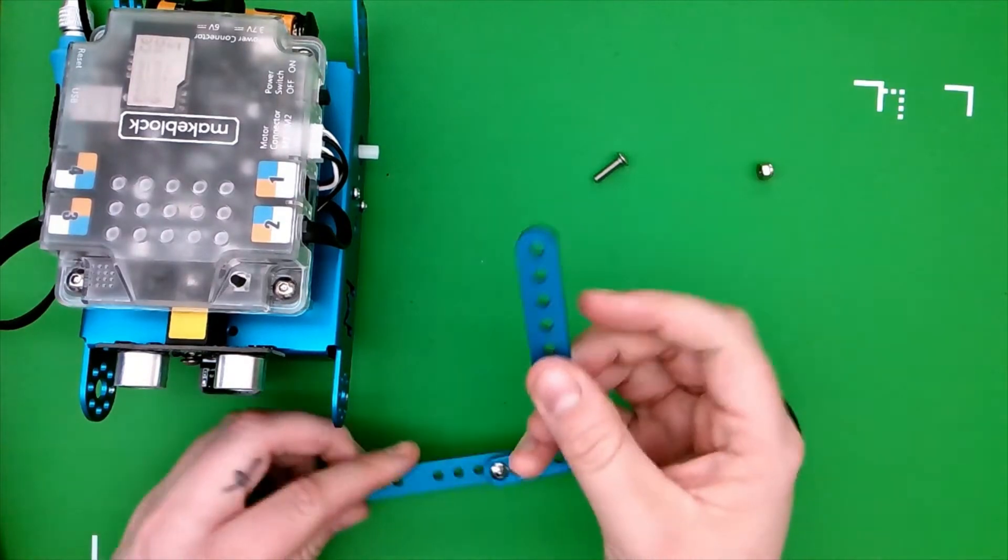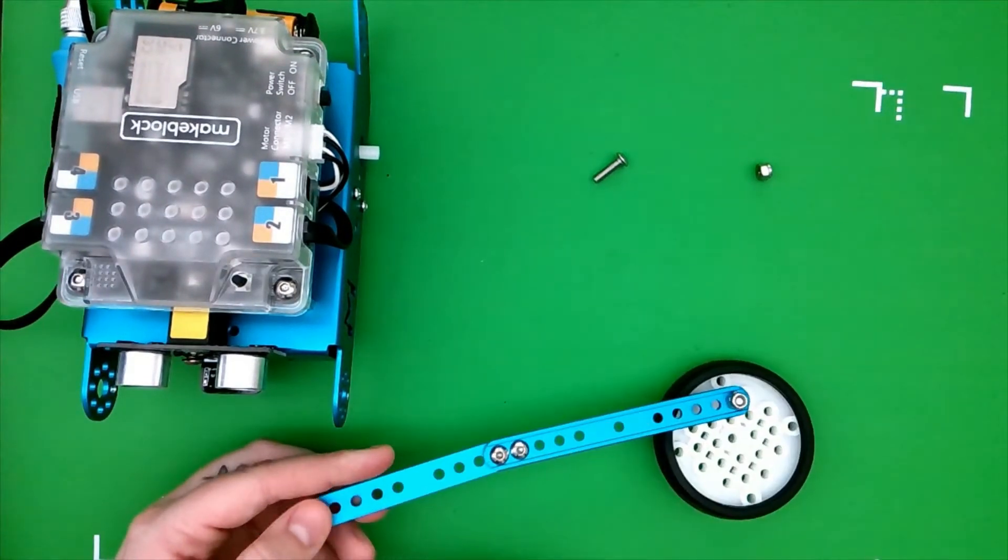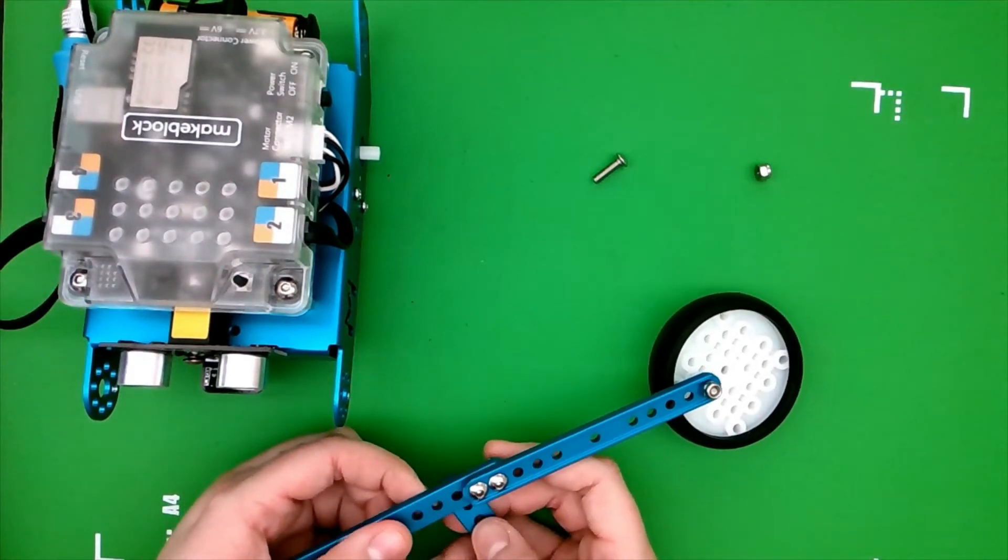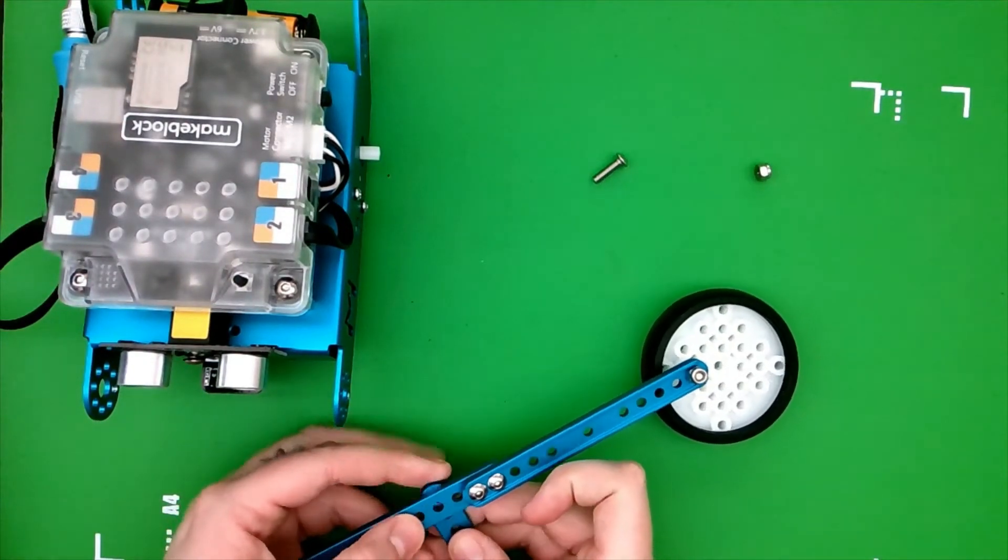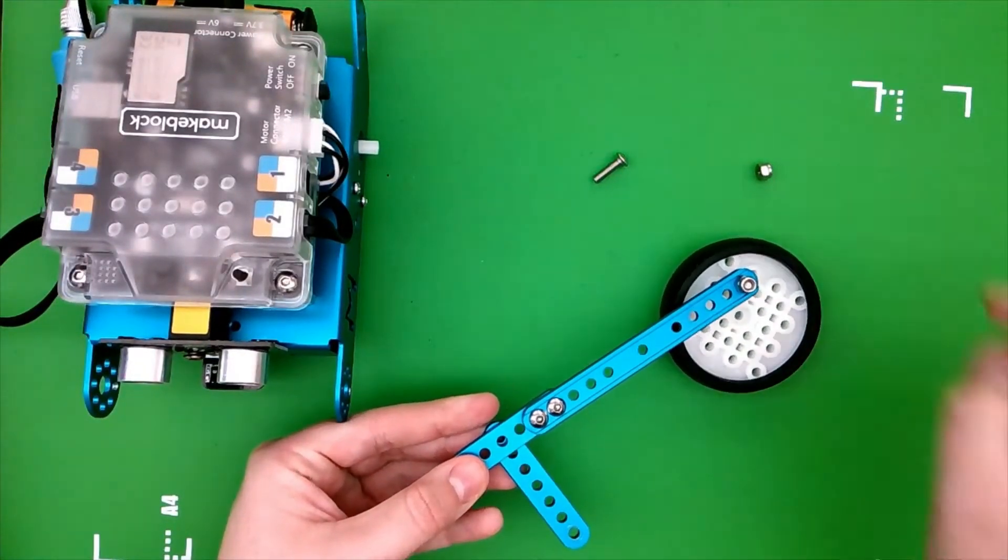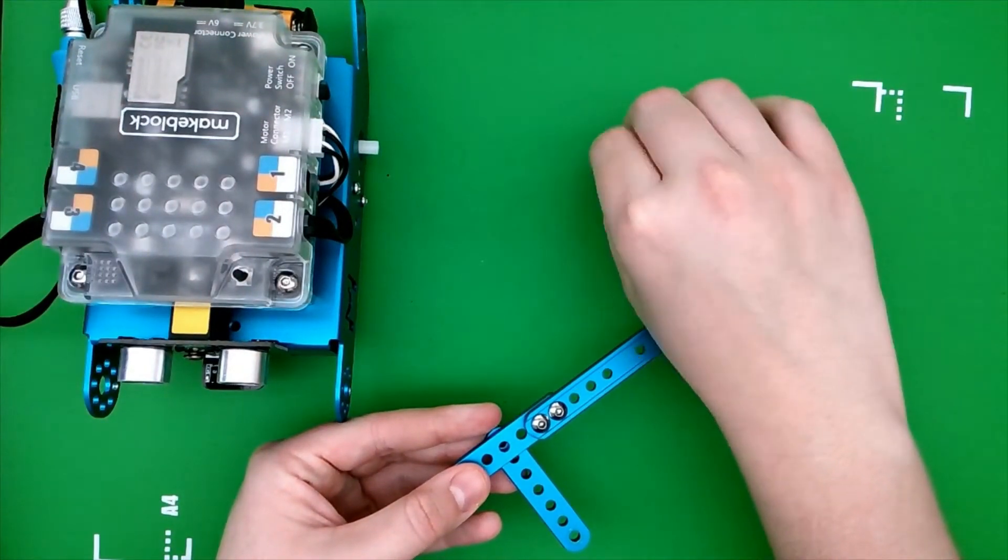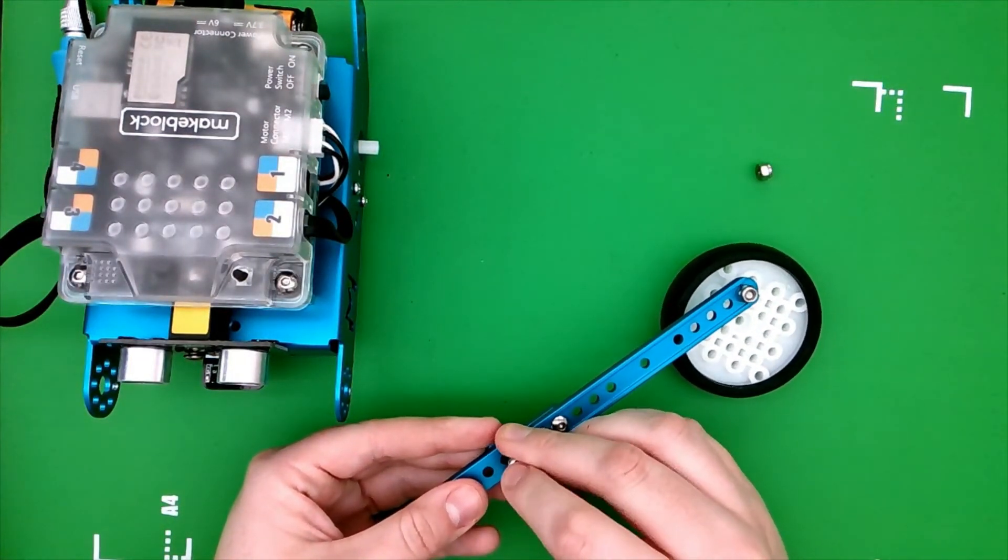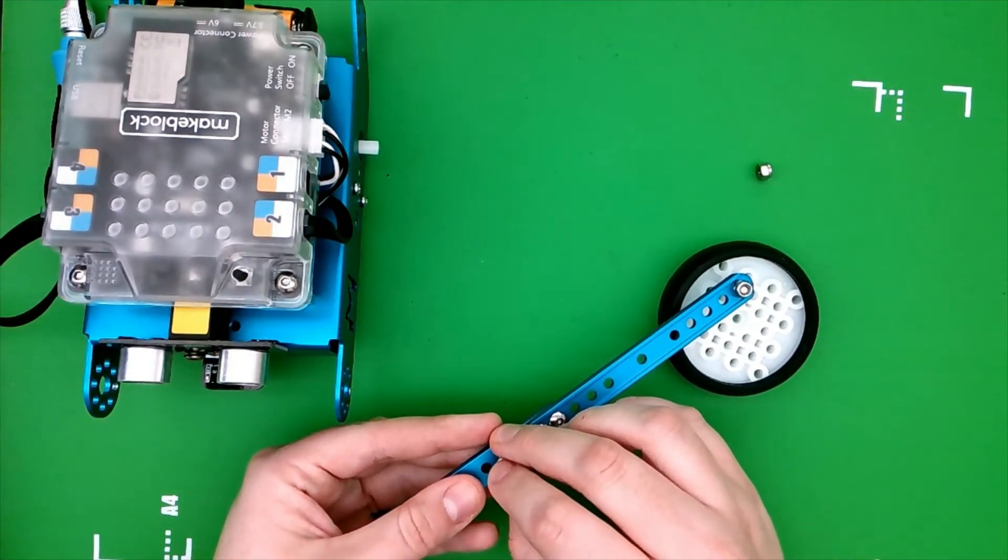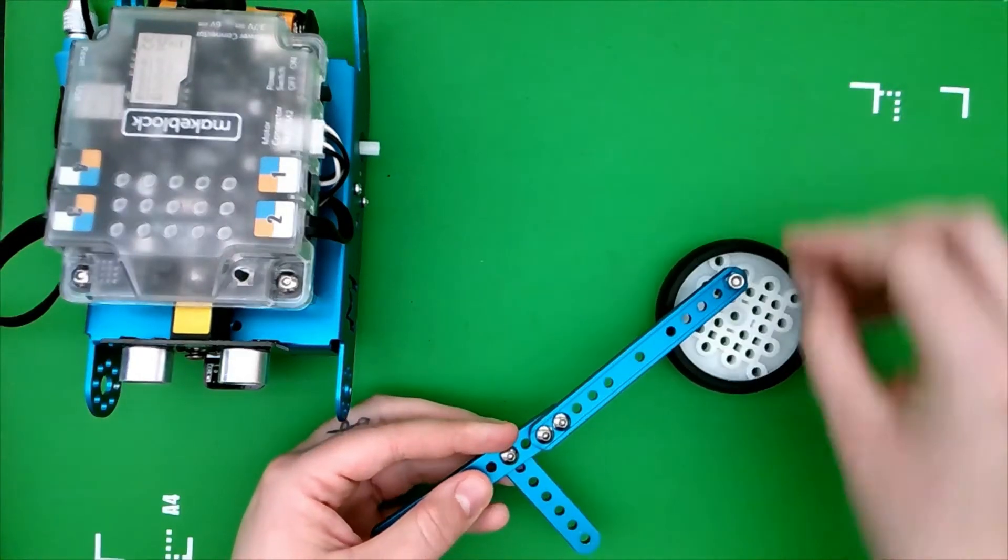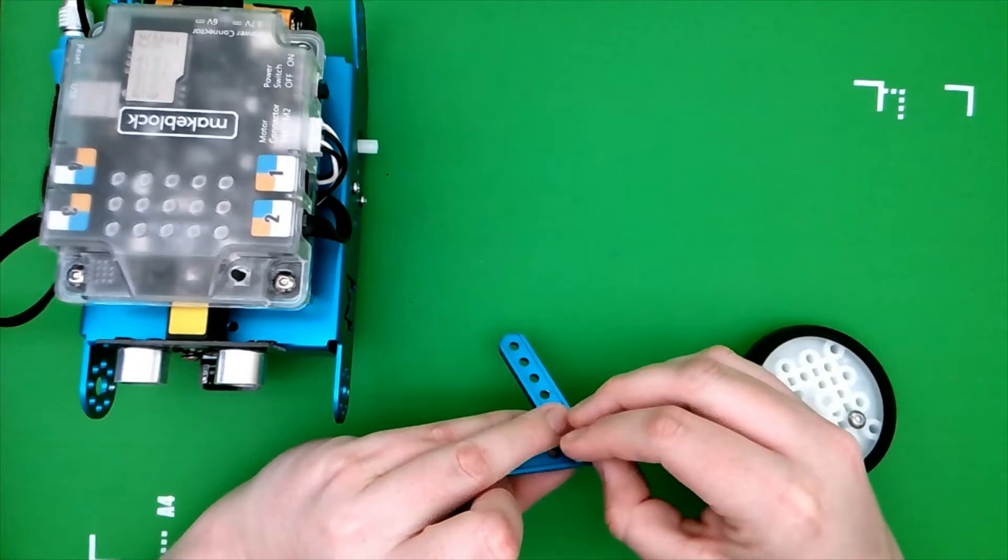Okay, and then the other part to this step, we're going to take this beam and we're going to attach it, skip a hole and attach it to this one right here so it should be like that, and then you're going to screw the locking nut on.